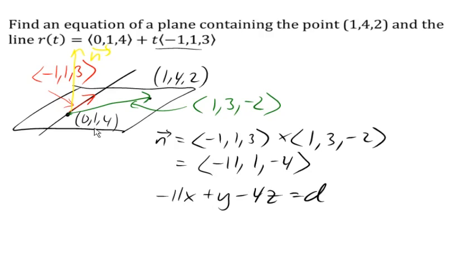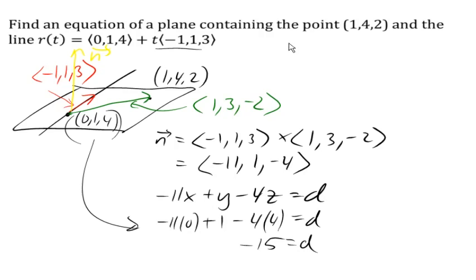I think we'll go ahead and use this one. So plugging this point in, 0 for x, 1 for y, and 4 for z, gives me 1 minus 16 is negative 15 for d. And so the final equation for my plane is -11x plus y minus 4z equals -15.